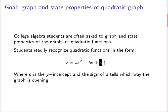Furthermore they recognize that the c value is the y-intercept. Of course if x is 0 then the y value is going to be c and therefore where the parabola crosses the y-axis.